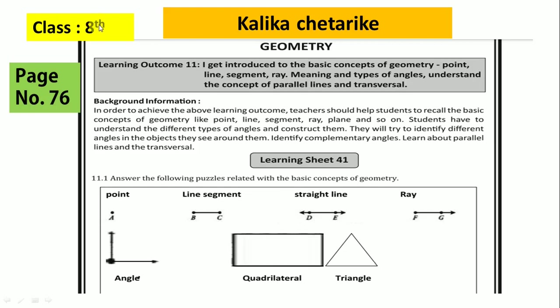In today's class we are going to solve 8th Kalika Chetri Ke Worksheet. The topic is Geometry. The worksheet number is 41 and the page number is 76. Here is the question. Answer the following puzzle related with the basic concept of geometry. The basic concept of geometry means here hint is given that point, line, segment, straight line, ray are the basic concept. First we see the basic concept of geometry. Then we solve the puzzles.